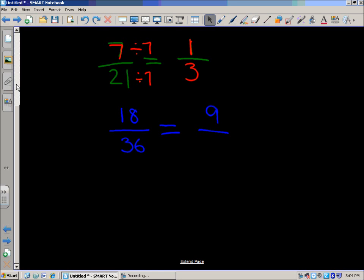Well, here we go. I know we have two numerators up there. We have to go from 18 down to 9. I know I'm getting smaller, so in this case I'm going to divide. 18 divided by something equals 9.